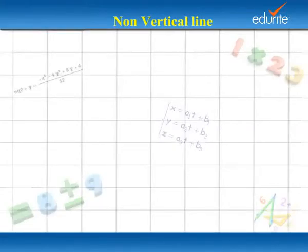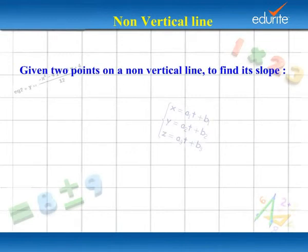Non-Vertical Line. Given two points on a non-vertical line to find its slope.